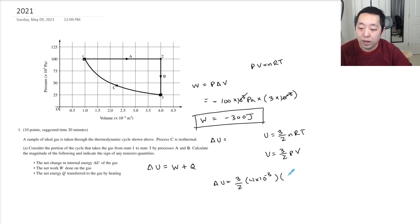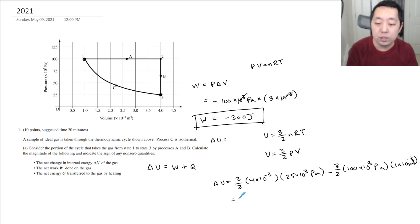So we're going to do 3 halves times 4 times 10 to the minus 3 times the pressure at point 3 which is 25 times 10 to the 3 Pascals. That's the final and then we started with how much energy, the energy at point 1 which would be 3 halves times 100 times 10 to the 3 Pascals times the volume which is 1 times 10 to the minus 3. So let's do that difference. My calculator was knocked over here so I'm going to do 1.5 times... I got zero. So the change in internal energy was zero.